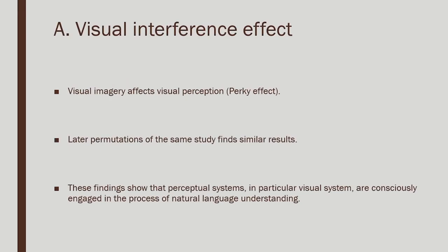Interference effects have been seen in various domains; one of the most interesting is visual interference. The study of visual interference goes back a long way — the Perky effect was observed around 1910. Perky's experiment showed that visual imagery affects visual perception: while you are imagining something and the object is simultaneously present on the screen, you think you are still imagining. Her experiment asked subjects to imagine something while staring at a blank screen.